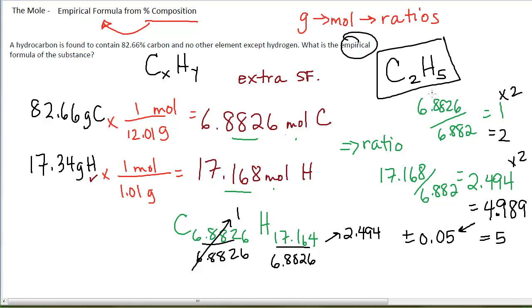That is my empirical formula. It is not necessarily my molecular formula. I'd need more information if I needed to find the molecular formula. But it is my empirical formula. It's the smallest whole number ratio of carbons to hydrogen based on this percent composition, which is given.